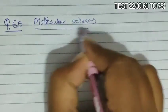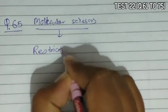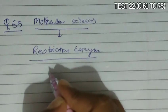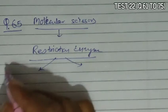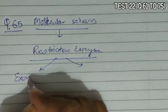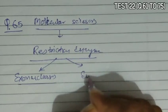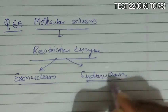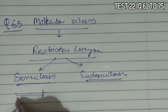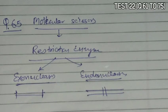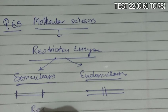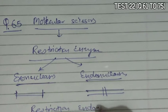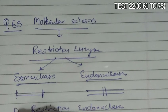Question 65 asks that molecular scissors used in genetic engineering are. Restriction enzymes are enzymes which cut at a specific site. Restriction enzymes are of two types: restriction exonucleases and restriction endonucleases. Exonucleases cut a nucleic acid from the ends, whereas endonucleases cut the nucleic acid from the middle. Restriction endonuclease is given in option D, so that is the correct answer.